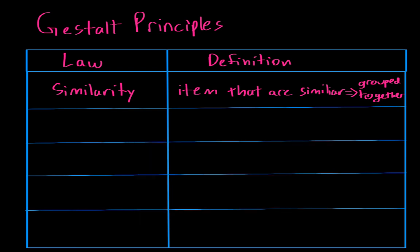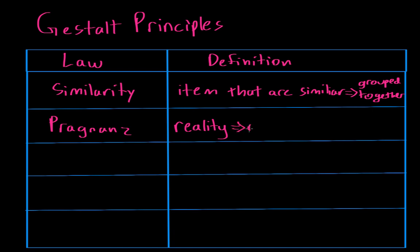The second Gestalt Principle is the law of Prägnanz. This basically says that reality is often organized or reduced to the simplest form possible. So reality is reduced to its simplest form. Let's look at an example.